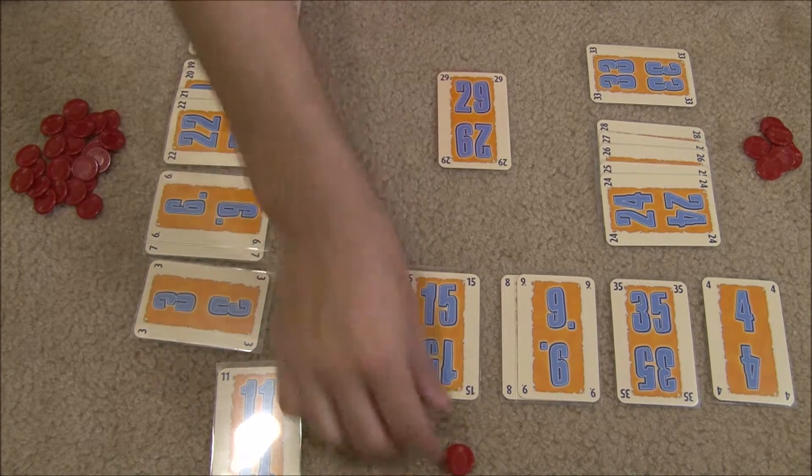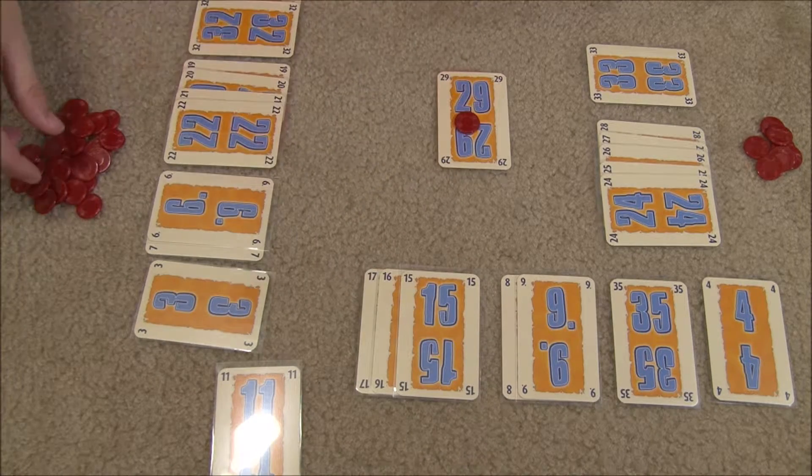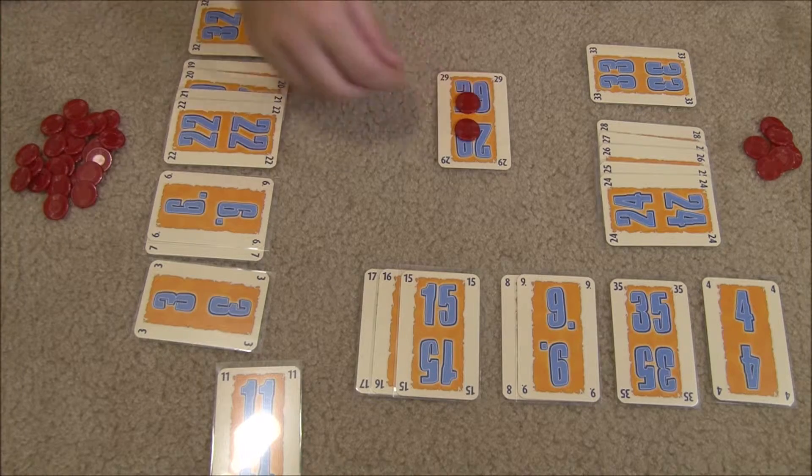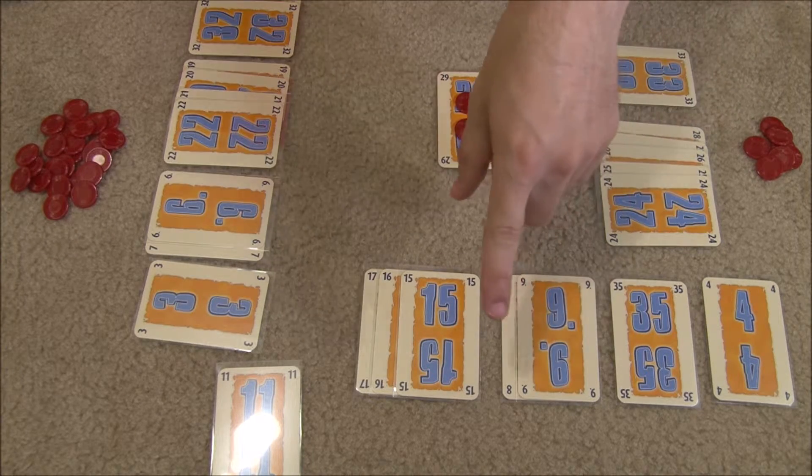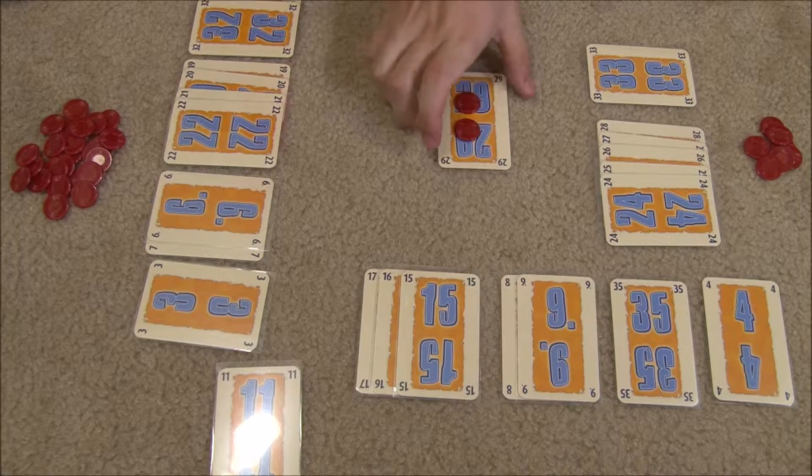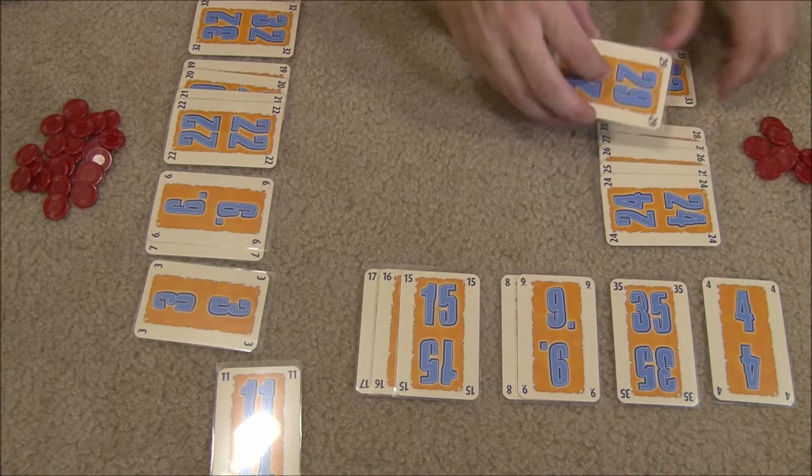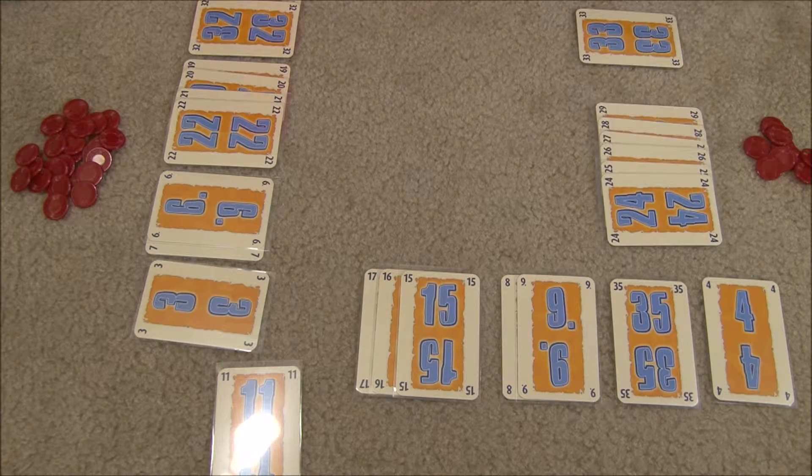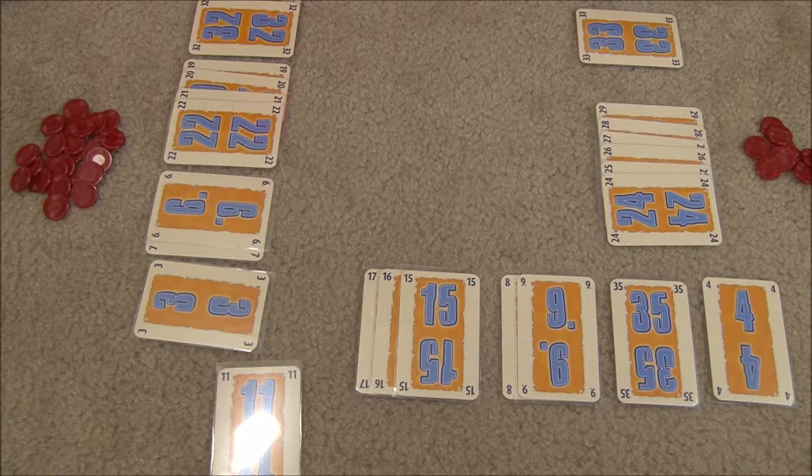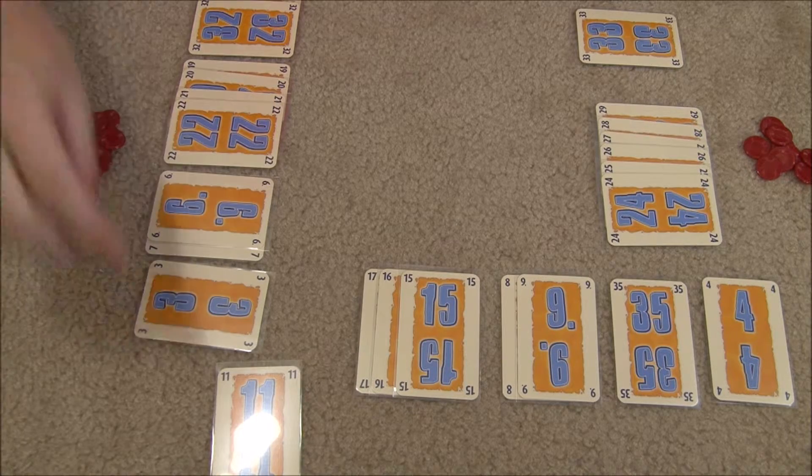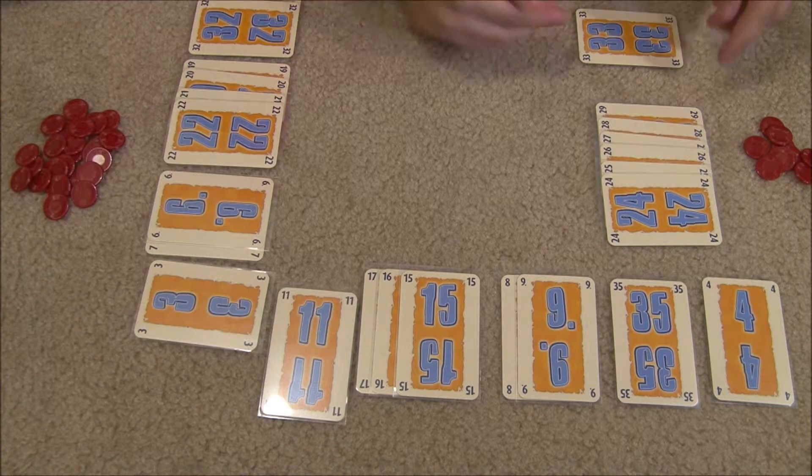And this guy goes first. He definitely doesn't want the 29, he puts a chip on it. And this guy's turn, he's going to put a chip as well. And this guy is pretty sure that guy's out of chips from what just happened. So he's going to take this and add it to his group. Now the game is over, because all cards have been taken, so players total their score.